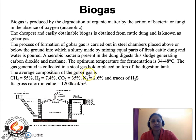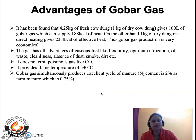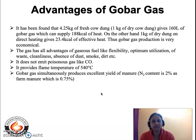The average composition of gobar gas is: methane 55%, hydrogen 7%, carbon dioxide 35%, nitrogen 2.6%, and some trace amounts of H2S. Biogas is basically carbon dioxide and methane, and its gross calorific value is 1200 kilocalories per cubic meter. It has been found that 4.25 kg of fresh cow dung (or 1 kg of dry cow dung) gives 160 liters of gobar gas, which can supply 188 kilocalories of heat, while 1 kg of dry dung can give 23.4 kilocalories of effective heat. Thus gobar gas production is very economical.